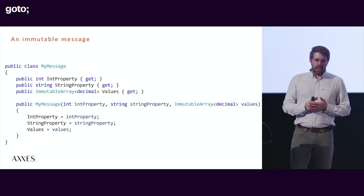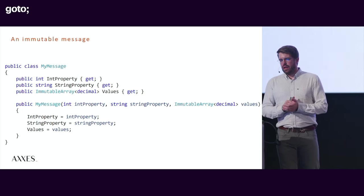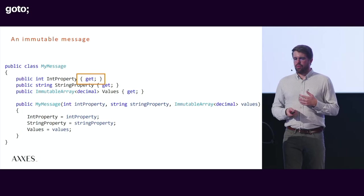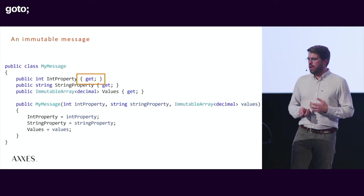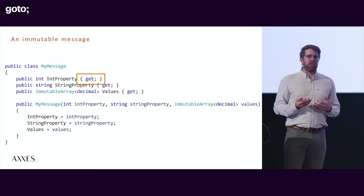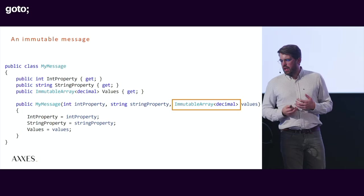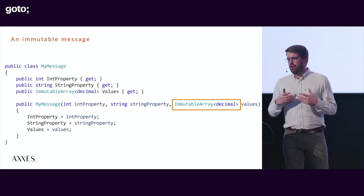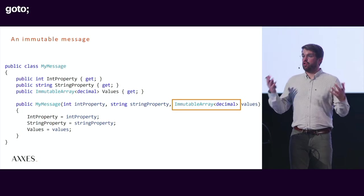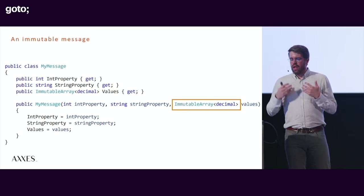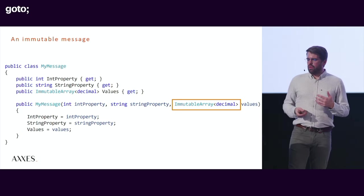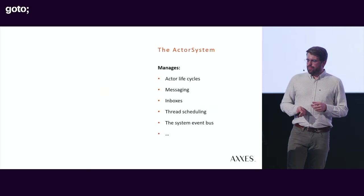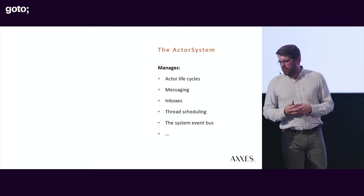In .NET, design your messages to be fully immutable by making all properties settable only in the constructor. When dealing with collections, use the immutable collections so that you cannot change the content of the collection after the message has been instantiated. That way everything in it is immutable and can cross a machine boundary without causing a headache.